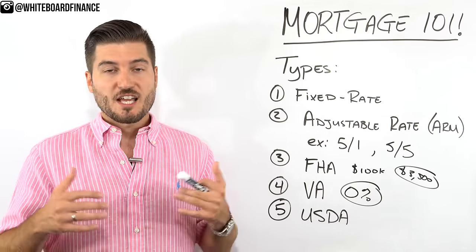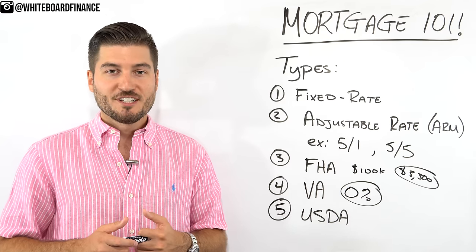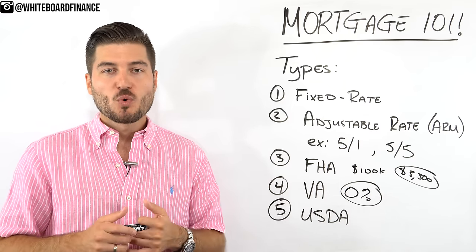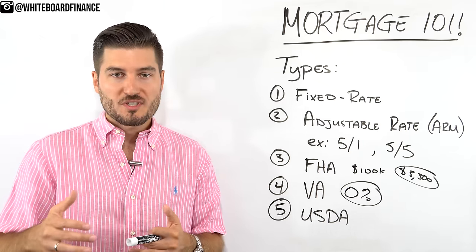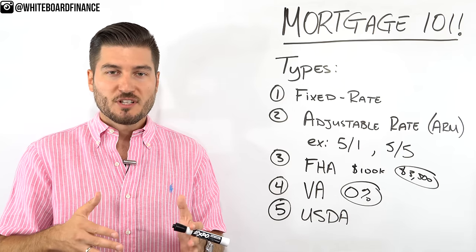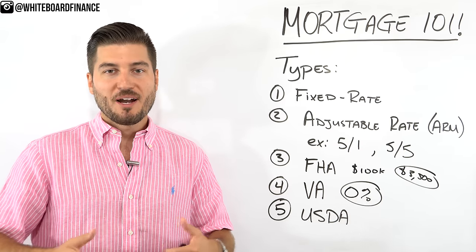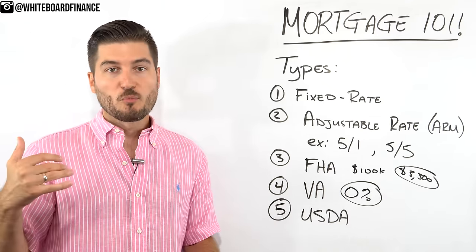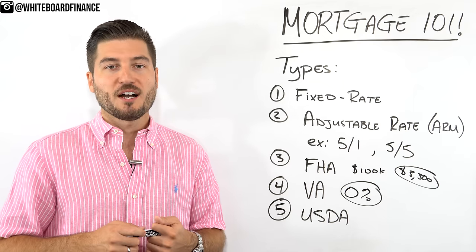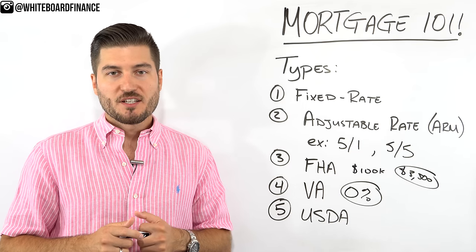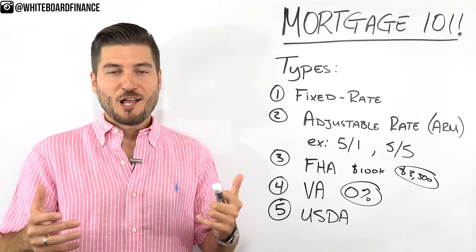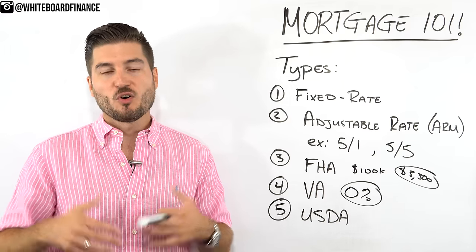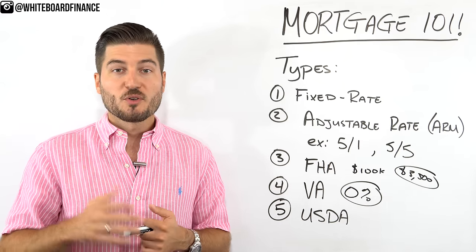Fifth is the USDA Loan, backed by the Department of Agriculture. This also allows you to get into a home with no down payment. However, you're limited to home improvement loans or purchase loans, and it has to fall within a certain income limit, geography limit, and property value cap — so you can't be buying mansions in the suburbs. It's typically for more rural areas. There are also two more loan types worth mentioning: the Jumbo Loan and the Interest-Only Mortgage, which you can Google for more details.